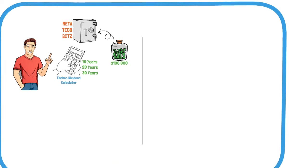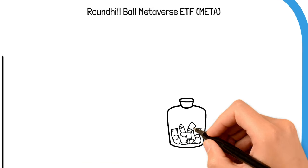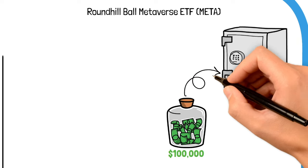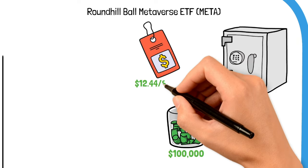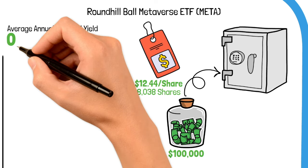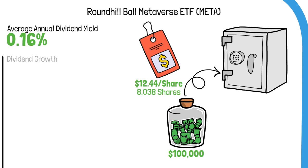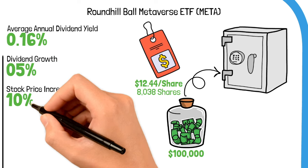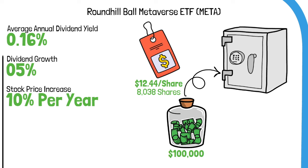Starting with the Roundhill Ball Metaverse ETF, investing $100,000 when the stock price is $12.44 would get you about 8,038 shares. With a historical average annual dividend yield of 0.16%, an expected rise of dividend payouts of 5%, a stock price increase of 10% per year, and reinvesting dividends, the growth potential is impressive.